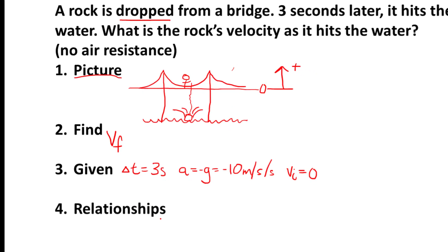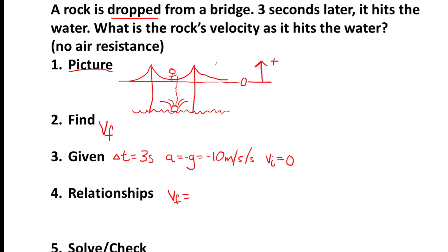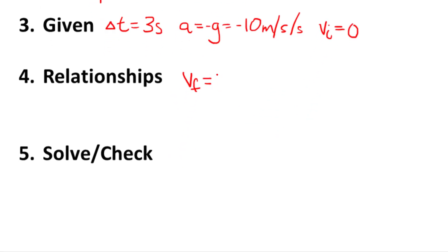Let's take a look at relationships. We want to find a relationship that will relate what we're trying to find, our final velocity, to the things that we know. And here's one: our final velocity is equal to our initial velocity plus our acceleration times time. Looks like we have enough information here to go ahead and solve the problem.